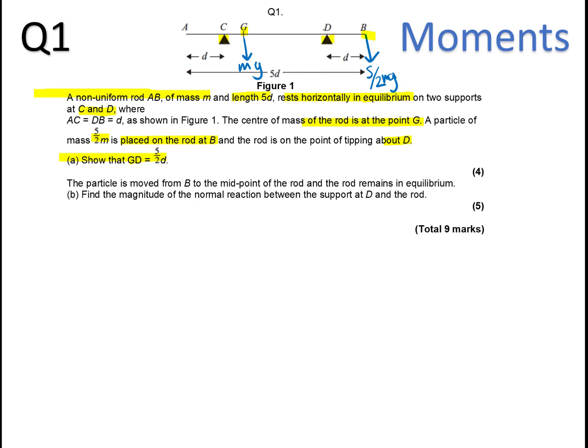Now show that GD equals 5/2D, so let's take moments about D. We have this, and we know that is going to be MG, and called GD, which is the length here, which is going to equal this moment here, which is going to be D, because you can see this distance here D, times 5/2MG. So if we divide out by MG, because it's at the point of tipping, we're going to get GD equals 5/2D.